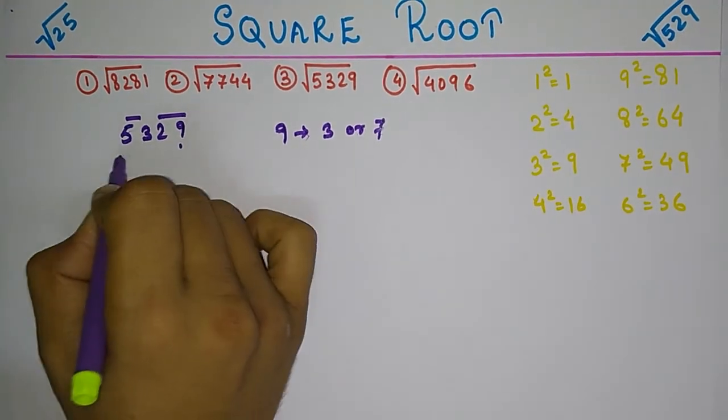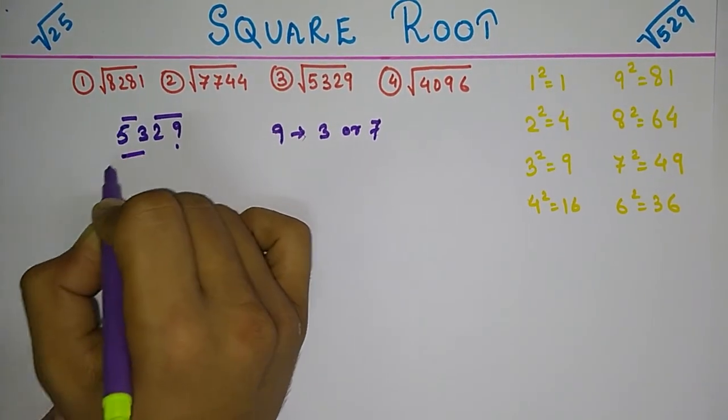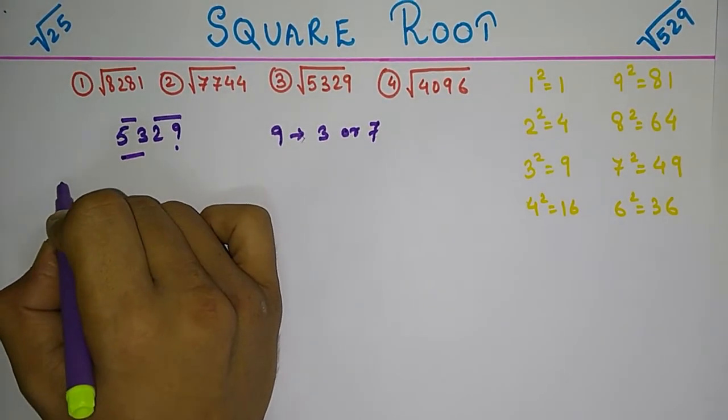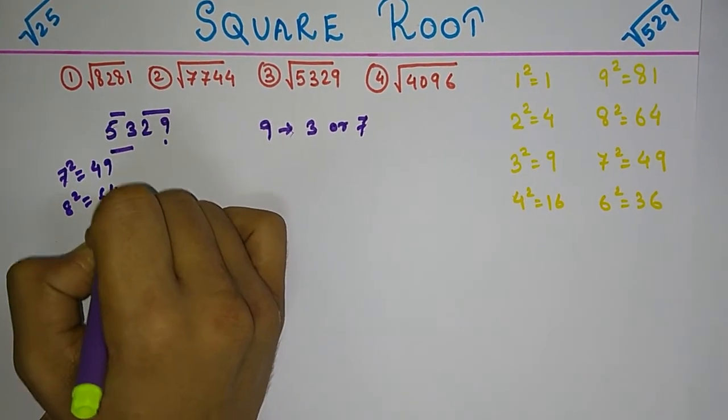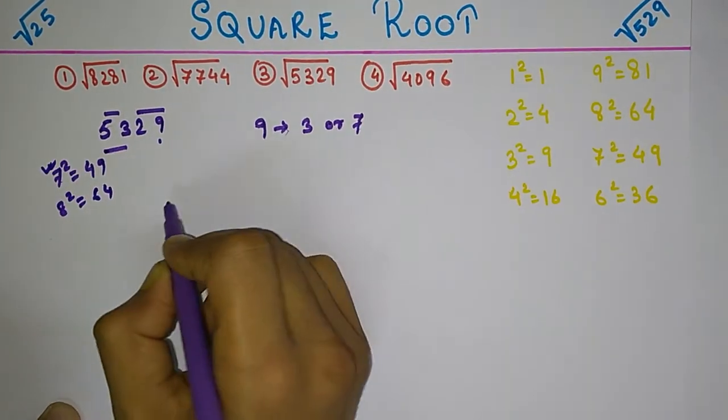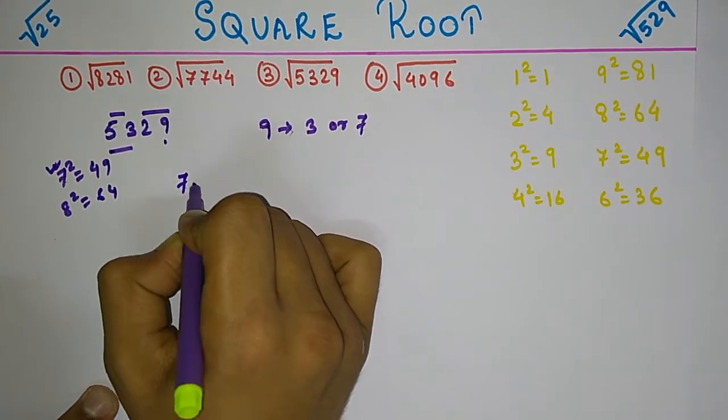7 squared is 49 and 8 squared is 64. So we are going to take the smaller one, that is 7, multiplied by the next digit, that is 8, which gives us 56.